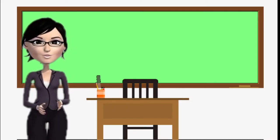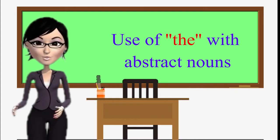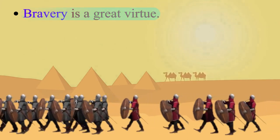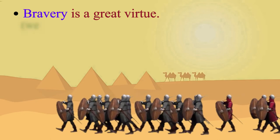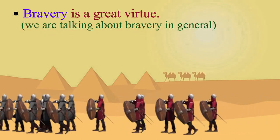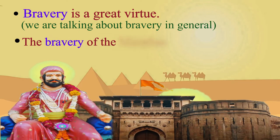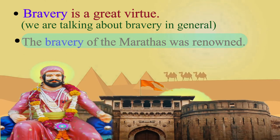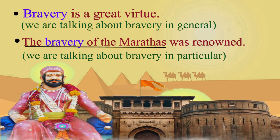Let us now see how we use the article 'the' with abstract nouns. 'Bravery is a great virtue.' In this sentence, we do not use an article because we are talking about bravery in general. On the contrary, 'The bravery of the Marathas was renowned.' In this sentence, we use 'the' because we are talking about bravery in particular.